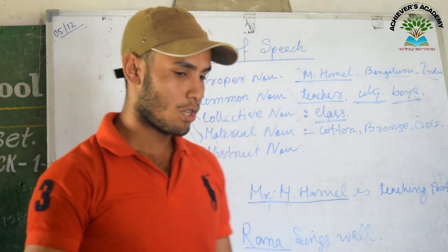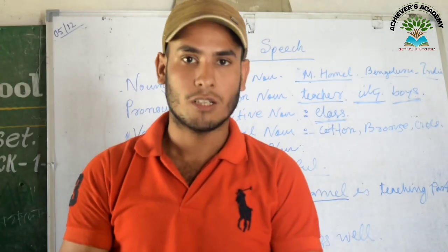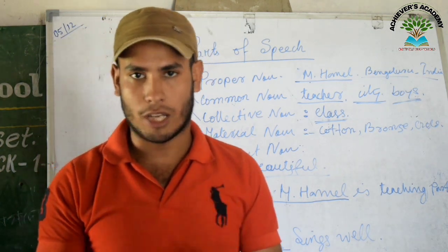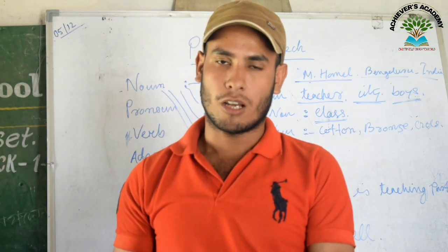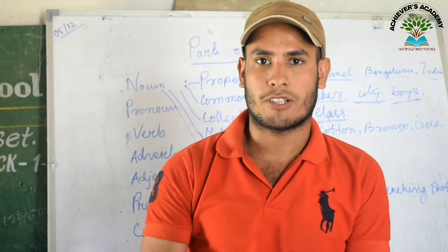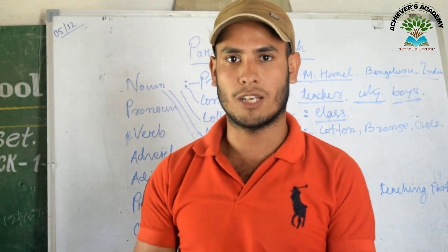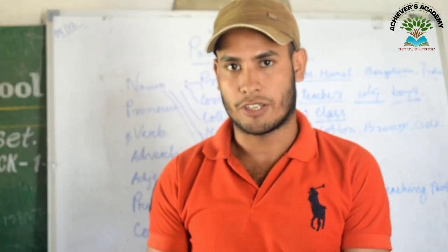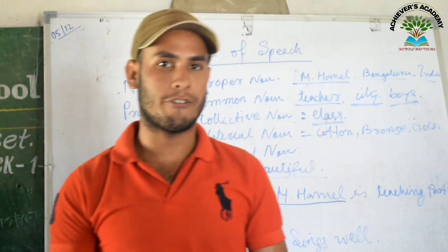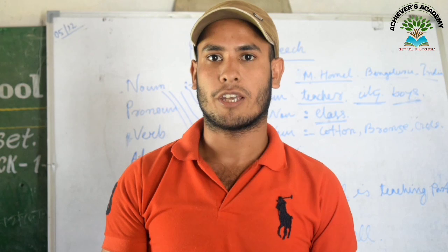Now the abstract noun. An abstract noun is a noun which you cannot see but you can feel. For example, 'The doll is beautiful.' The word 'beautiful' is not a noun here, but when I convert it to 'beauty,' then it becomes a noun. Beauty is something you cannot see but you can feel. Likewise, love — you cannot see it but you can feel it. These are examples of abstract nouns.